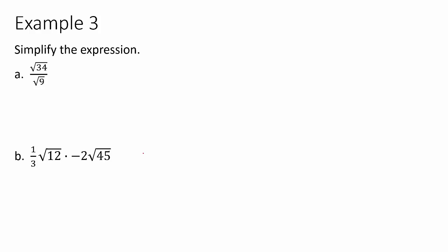For the next set of examples, in part a the fraction is already split into separate radicals. We check whether 34 and 9 simplify as a fraction — they don't. We can take the square root of 9, which is 3, but √34 doesn't simplify: 34 is even so it divides by 2, giving 17, which is prime. No pairs, so it won't simplify. The answer is √34 / 3.